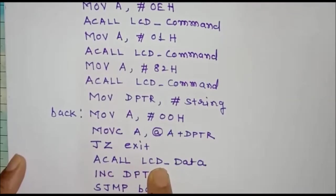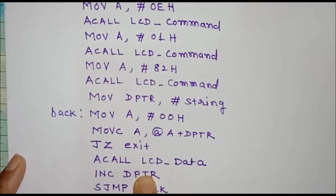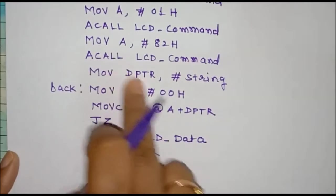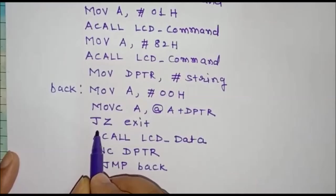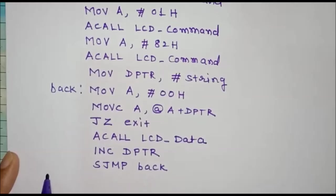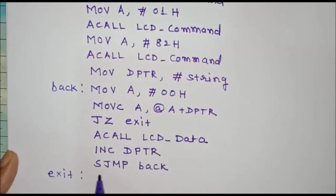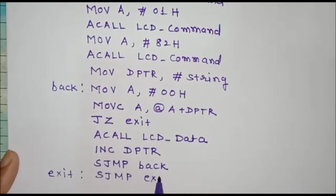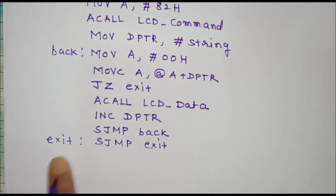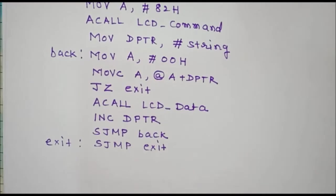We write the ASCII value to the data register, increment DPTR for the next character, and continue this operation. If the data stored in the accumulator is 0, we jump to the exit label. At exit, we use SJMP exit so the controller continuously executes this instruction, effectively stopping execution.